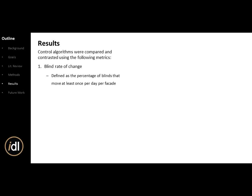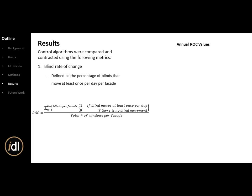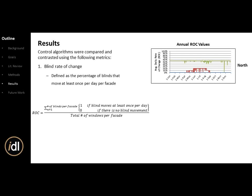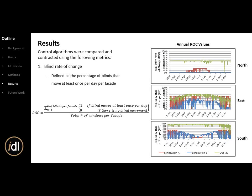The results I'll cover include blind rate of change, defined as the percentage of blinds that move at least once per day per facade. Annual rate of change values for north, east, and south facades show: red is Blind Switch A, blue is Blind Switch B, green is DGI 20. DGI has the highest rate of change because it's a simple above/below 120 trigger. Blind Switch A is close behind on the east facade, while Blind Switch B is lowest — and on the north facade, Blind Switch B never closes the window.